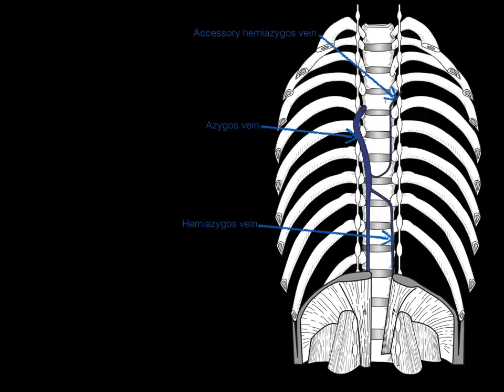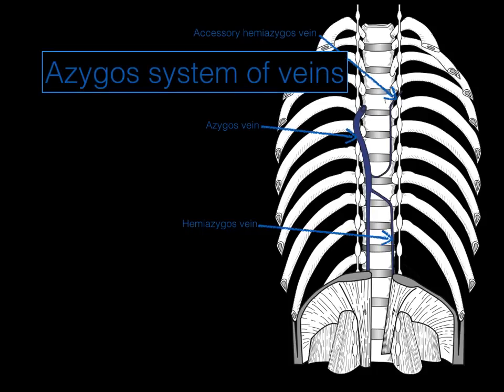Why is it called the azygous system of veins? Let's look at the word azygous. The letter 'a' means without. And 'zygous' — think zygote, zygomatic arch — means a union, a marriage, a bringing together, a pair. They call this the azygous system of veins because these veins are not paired. You have on the right side the azygous vein that vertically runs up and down and drains all the right intercostal spaces, but you don't have a paired structure on the other side — instead you have the hemiazygous and accessory hemiazygous veins.